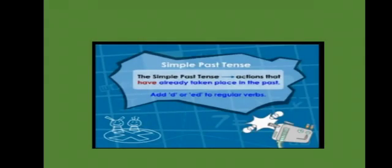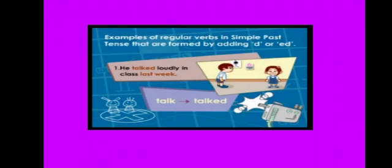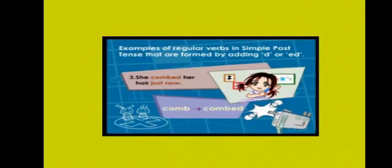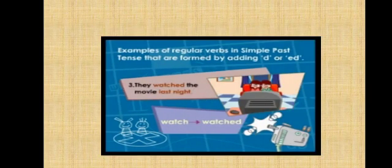The simple past tense is used for actions that have already taken place in the past. We usually add D or ED to regular verbs. Examples of regular verbs in simple past tense: He talked loudly in class last week — 'talk' becomes 'talked.' She combed her hair just now — 'comb' becomes 'combed.' They watched the movie last night — 'watch' becomes 'watched.'